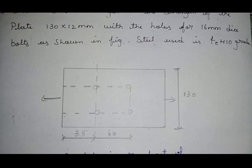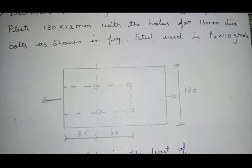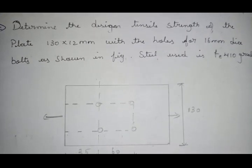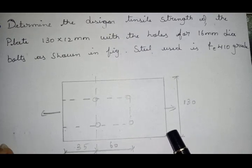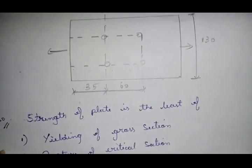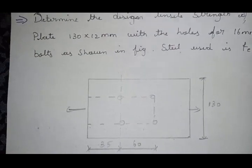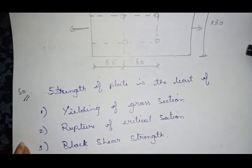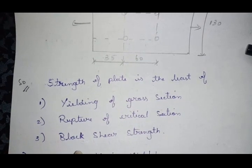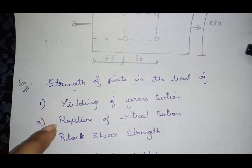There are four bolts in this arrangement. The edge distance given is 35 mm, the pitch is 60 mm, and the width of the plate is 130 mm. To find the tensile strength of this arrangement, you need to find: the yield strength of the plate, the rupture capacity of the plate, and the block shear. Whichever value is least among these three will be the strength of the plate.